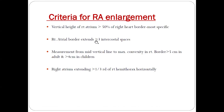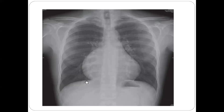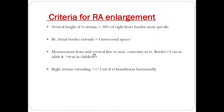Second criterion: a right atrial border extending more than three intercostal spaces. Here you can see the right atrial border covering one, two, three, four — almost four intercostal spaces. Since it is more than three intercostal spaces, it again denotes right atrial enlargement.